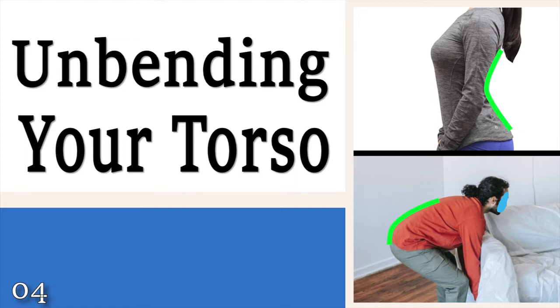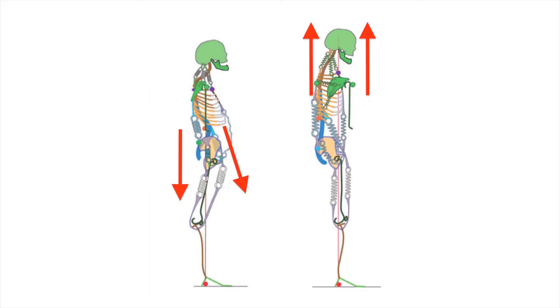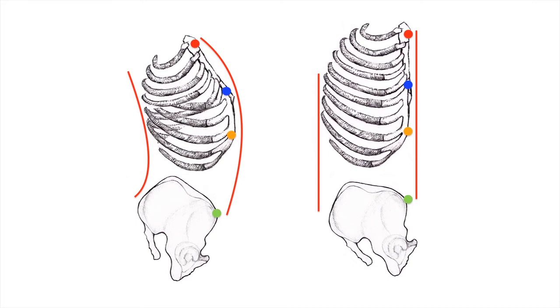There is one major concept concerning the torso that we've not yet addressed head-on. It's crucially important to understand that we want the ribcage to be high above the pelvis. Most people keep their ribcage much too low, to the point that their ribcage rests just barely above their pelvis.